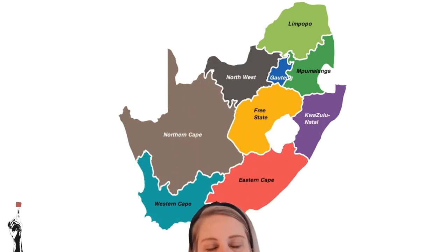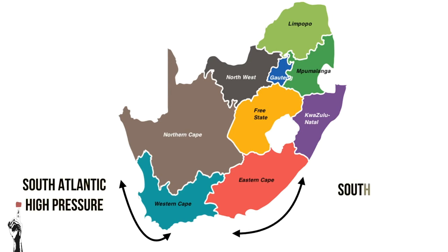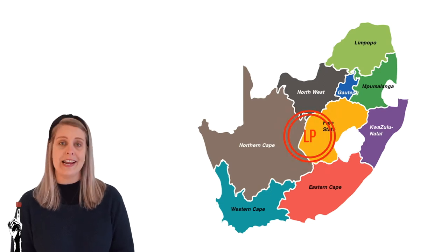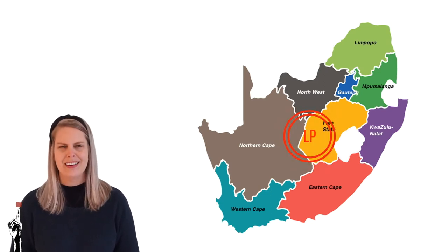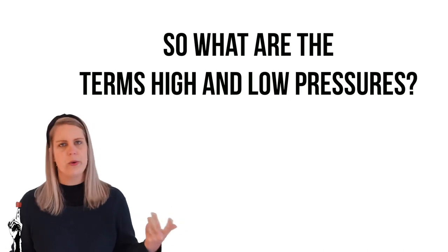South Africa has three main pressure systems. Along the west coast of South Africa, the South Atlantic high pressure is experienced. Along the east coast of South Africa, the South Indian high pressure is experienced. During summer, there is a low pressure over the interior of South Africa in place of the Kalahari high pressure. So what exactly is meant by high and low pressures?